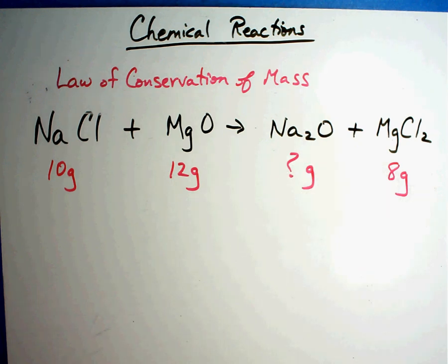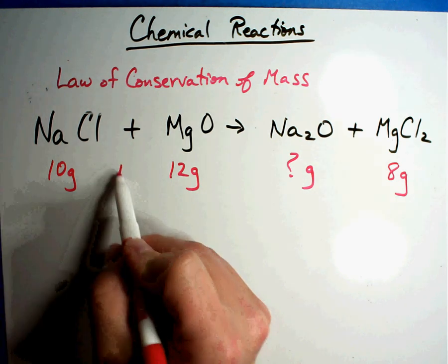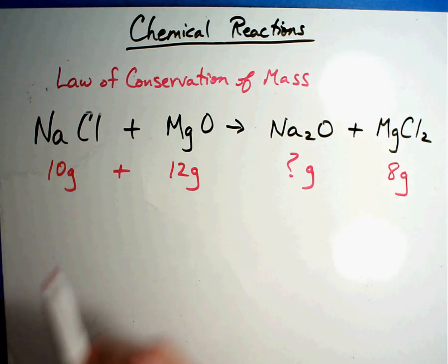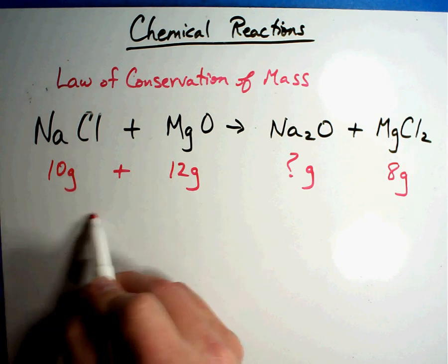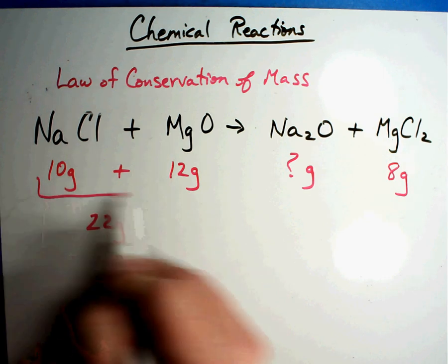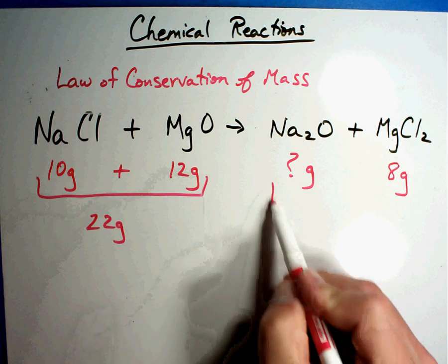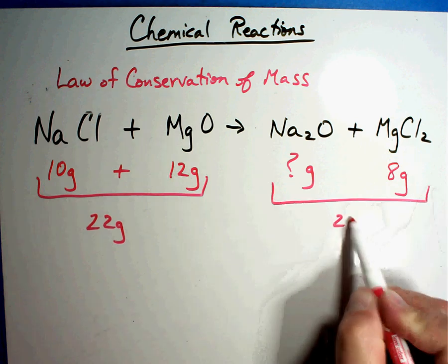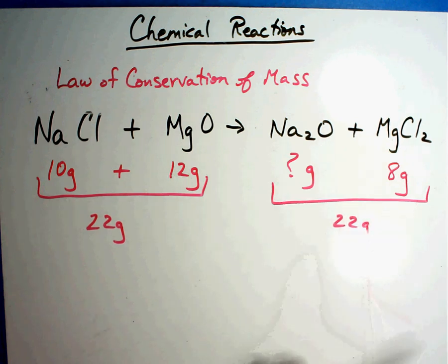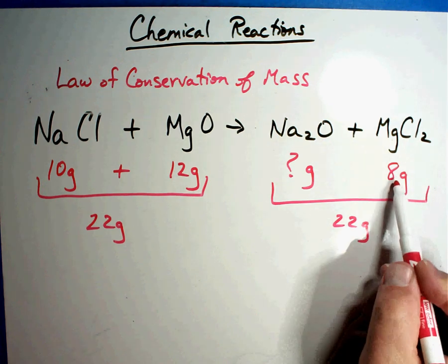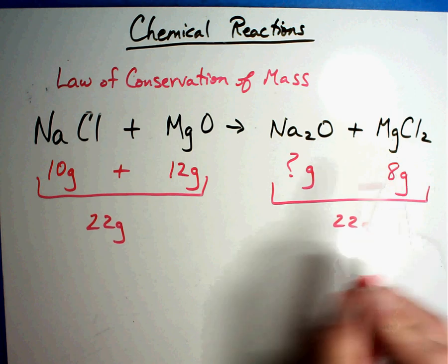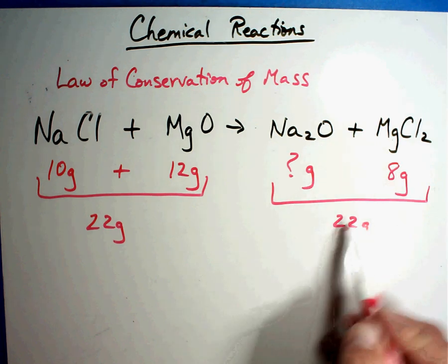10 plus 12 is 22 total grams, which means this side has also got to be 22 grams. Well, if I know this is 8 grams, then how many grams is this? Well, 22 minus 8, my answer is 14 grams.